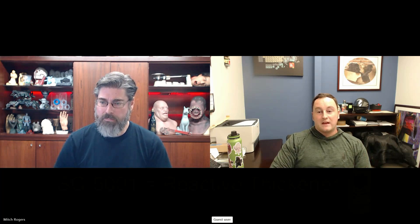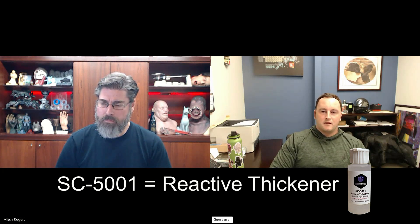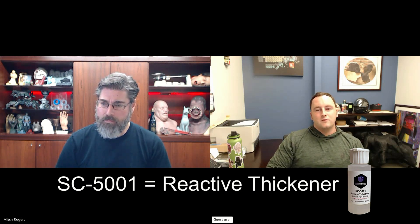In general, thixotropic additives and viscosity modifiers are pretty widely used in the industry. Generally, they fall into two major categories: one being inert and one being reactive. This SC-5001 is a more reactive thixotrope material — you could really call it a viscosity modifier. It doesn't allow for shear thinning, and that's the key difference between a thixotrope and a viscosity modifier. With a viscosity modifier, you will increase your viscosity as a whole.